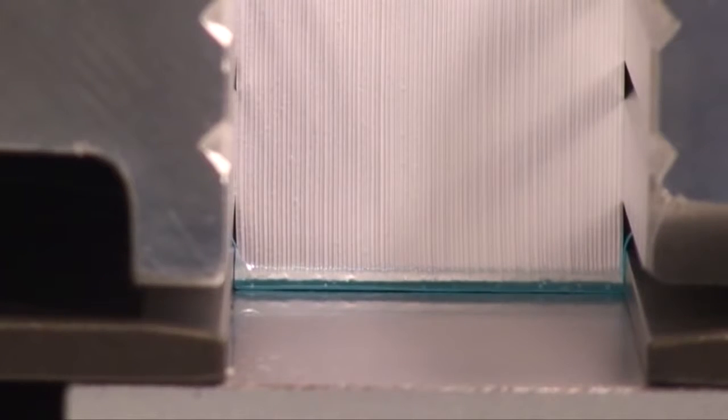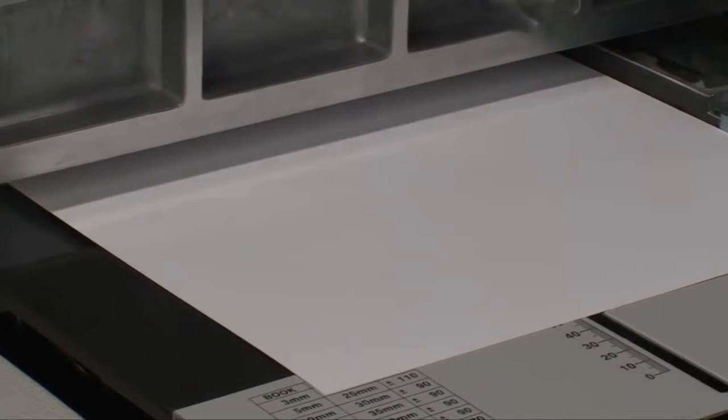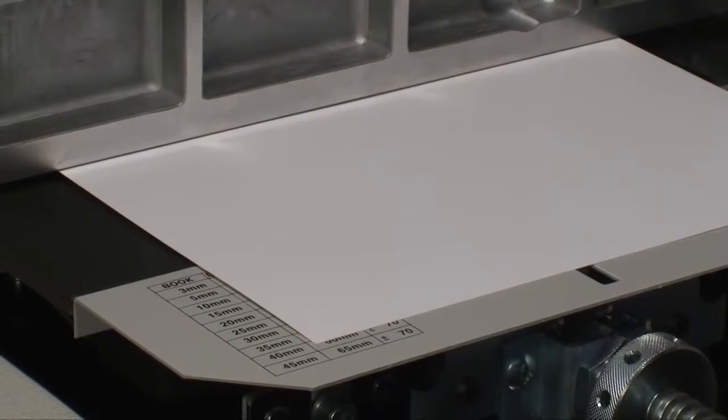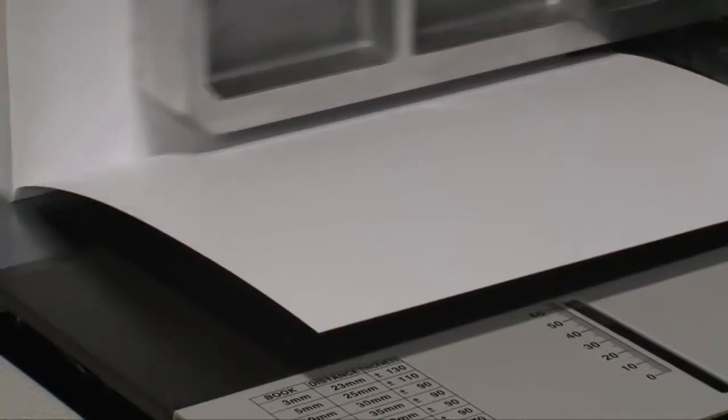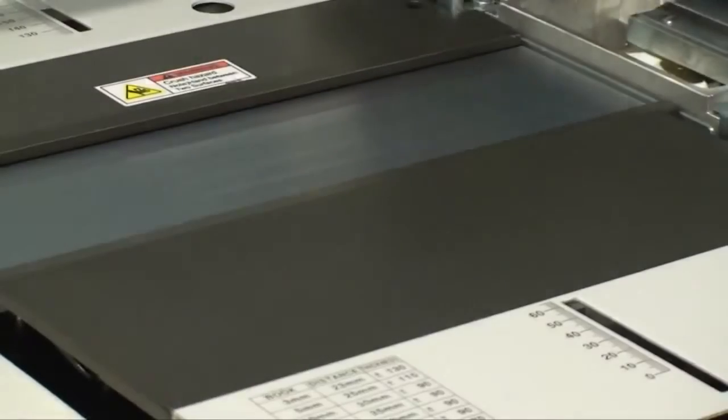The nipper is strong enough to bind most books without creasing the cover. Side gluing allows for a hinge with or without creased covers.